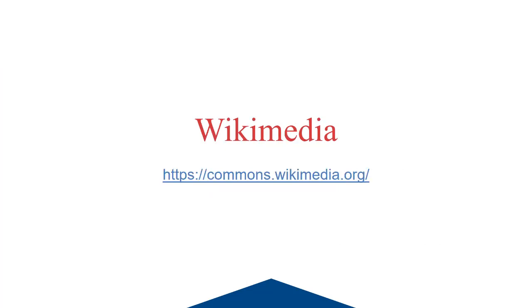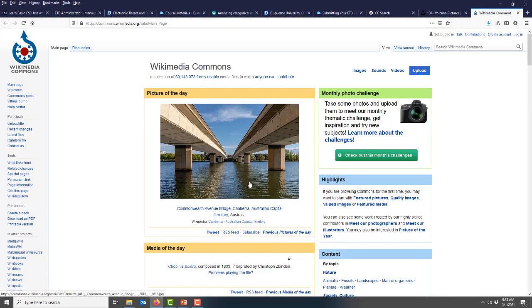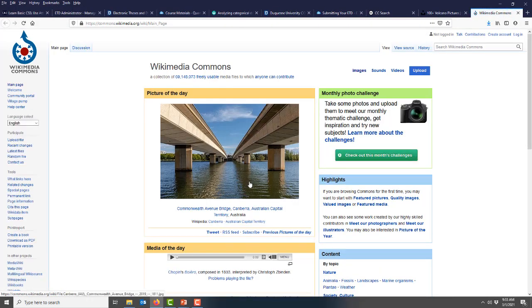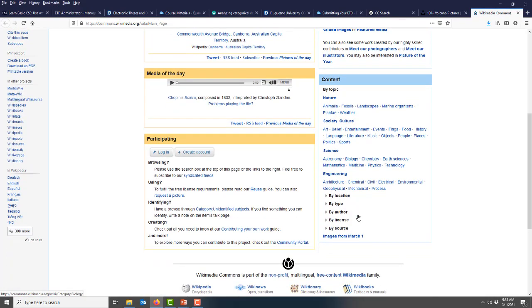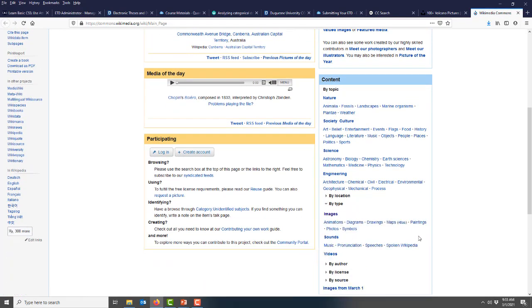Third, there's the Wikimedia Commons. This is a great source for photos but also for a wealth of other media. You can search by type here, which is especially useful if you want something like a map or an illustration.